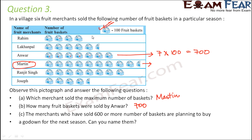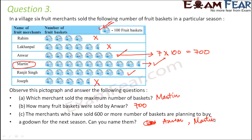This has more than 6 pictures. The first one — no. The second one: 1, 2, 3, 4, 5 and a half — so this is also less than 6. Anwar: 1, 2, 3, 4, 5, 6, 7 — yes, this has more than 6 baskets. Martin obviously has more than 6 baskets because it is even greater than Anwar. What about Ranjit Singh? 1, 2, 3, 4, 5, 6, 7, 8 — this also has more than 6 pictures. Joseph: 1, 2, 3, 4 and a half — so this also doesn't have. So there are 3 such merchants who sold more than 600 baskets — they are Anwar, Martin and Ranjit Singh.